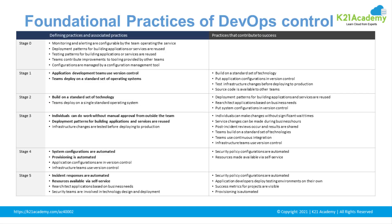The foundational practices of DevOps are divided into two sections: defining your practices and practices that contribute to success. Stage 0 is planning — defining monitoring, deployment patterns, and testing patterns. Stage 1 is coding, where the application team uses a version control system to build a standard set of technologies, put application configurations in version control, test infrastructure changes before production, and make source control available to other teams. Stage 2 is building — build artifacts are also stored in source control.